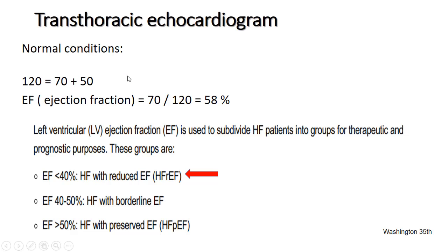Siêu âm tim qua thành ngực cho thấy EF tâm thất trái là 32%. Bình thường cuối thì tâm trương có 120 cc máu, tim bóp ra 70 cc, còn lại 50 cc. EF = thể tích nhát bóp / thể tích cuối tâm trương = 70/120, bình thường khoảng 58%. Ở bệnh nhân này chỉ có 32%, cho thấy bệnh nhân đang suy tim sung huyết với EF giảm.